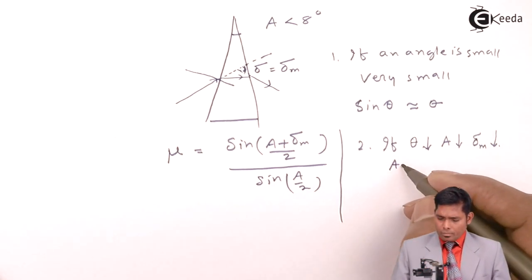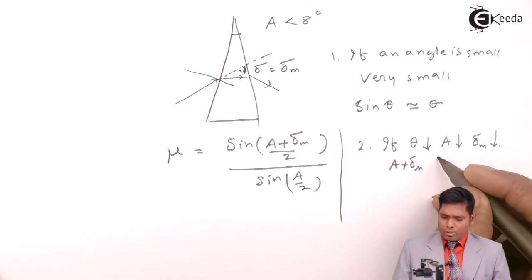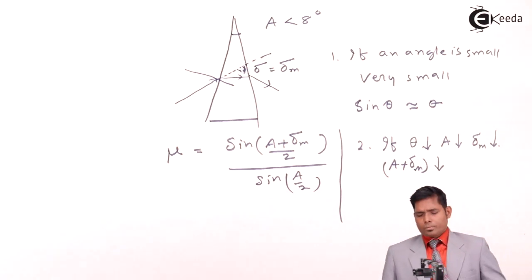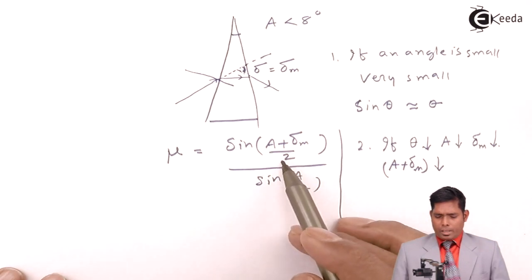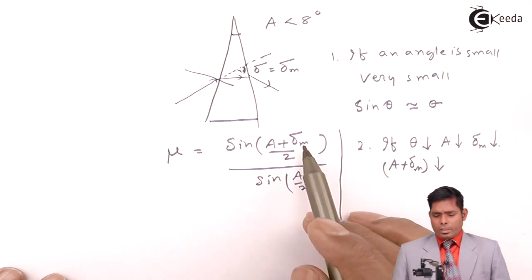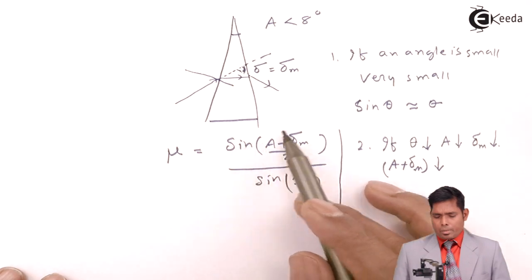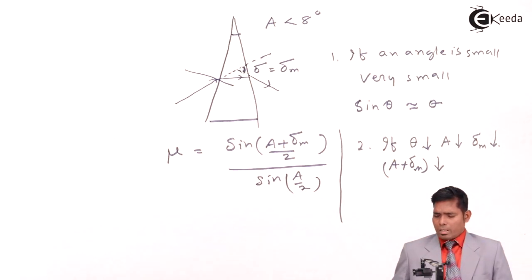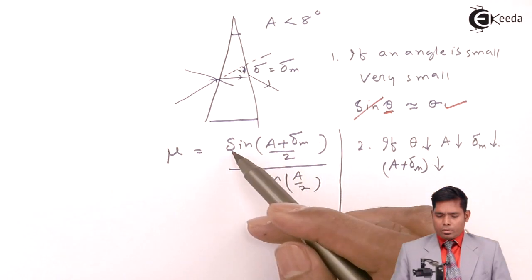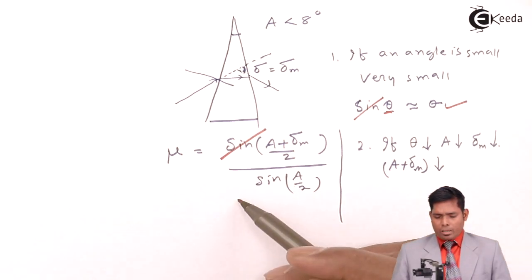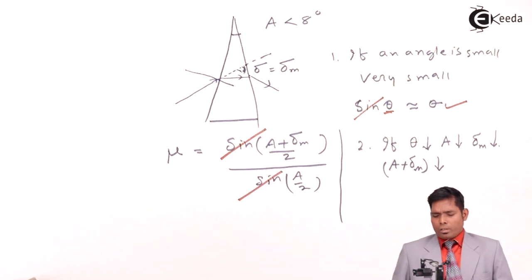Then A plus delta m is also very small. Then in that case, sine of (A plus delta m) by 2 is only (A plus delta m) by 2. You don't need to write sine, because like this. You strike off sine here and write only theta. Similarly, strike off this, strike off this. So for a thin prism...